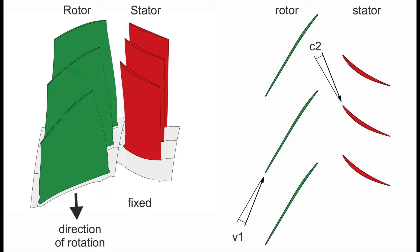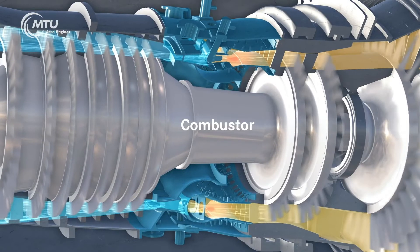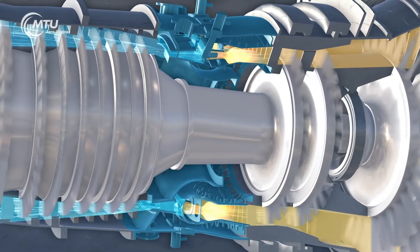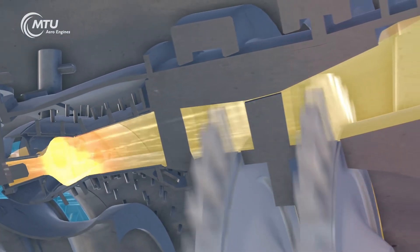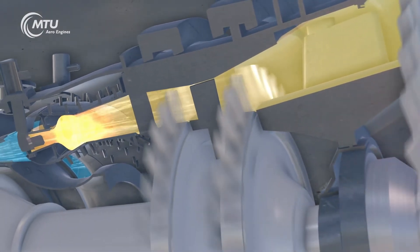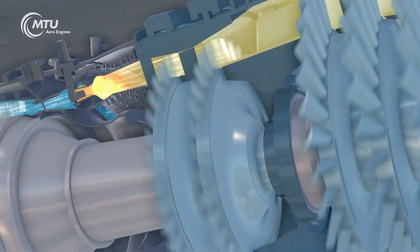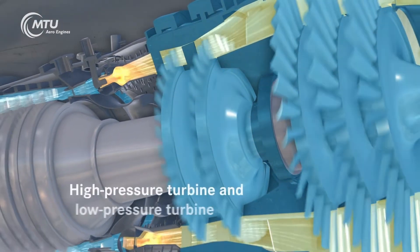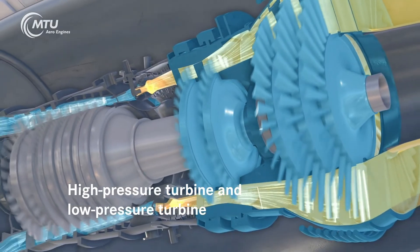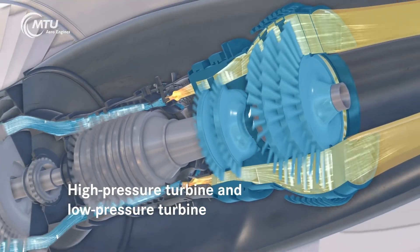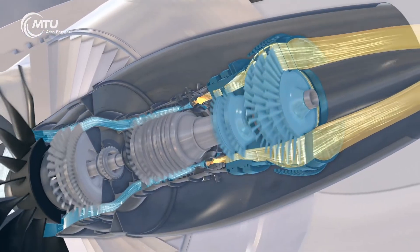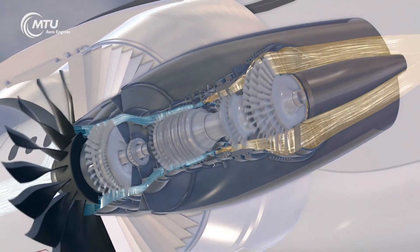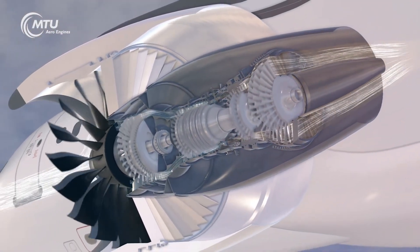In the combustor, the challenge was to maintain stable combustion. The combustor's role is to mix fuel with compressed air and ignite it to produce high-energy gas. Achieving efficient combustion requires a stable flame, proper fuel-air mixing, and minimal emissions. The Kaveri engine struggled with incomplete combustion and high emissions of unburned hydrocarbons, which adversely affected its efficiency and performance.